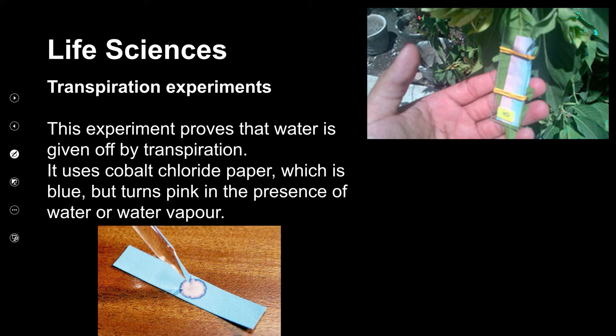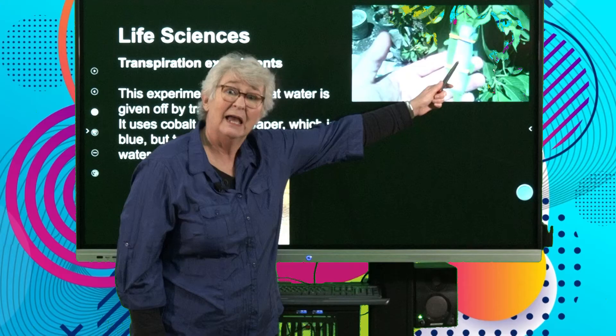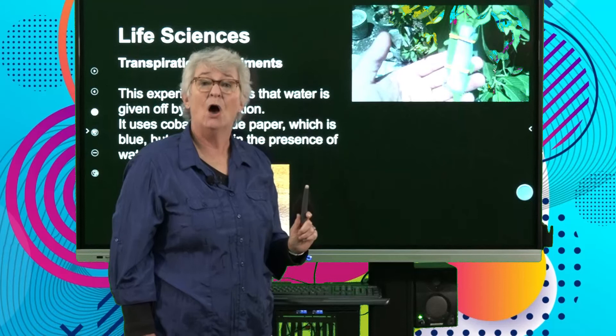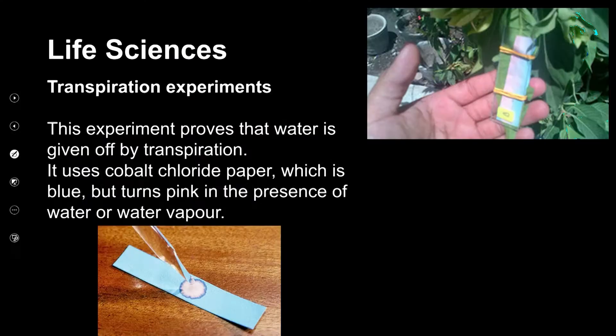You might also have done a more precise experiment to prove that the liquid given off from a leaf is actually water. This uses cobalt chloride paper — a blue-coloured chemical infused in paper that is blue when dry, but turns pink if there is even water vapour in the atmosphere. It won't change colour for any other liquid. With cobalt chloride paper on the underside and topside of a leaf, it turns pink, showing that water has been given off.